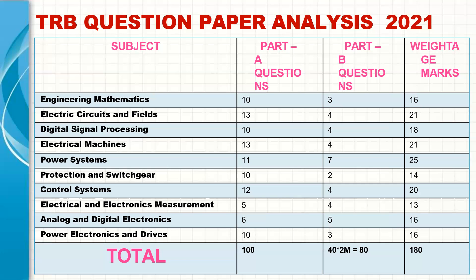This is the detailed analysis of the recent TRB question paper. We can't predict the next paper exactly, but based on past weightage, the most important subjects requiring special attention are Power Systems, Electrical Machines, and Control Systems. Everyone needs to focus double effort on these high-weighted subjects to score well.